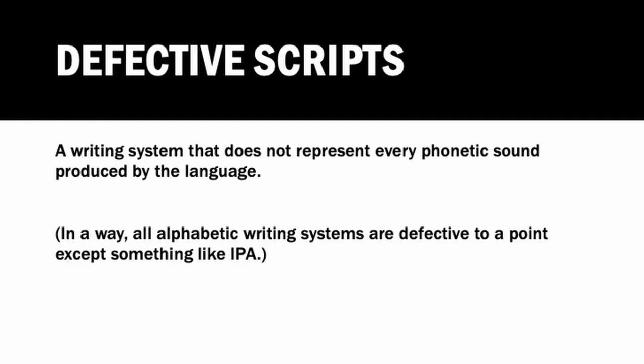There are a number of syllabic writing systems that do capture every sound — things like the scripts of the Indian subcontinent, Japanese, or at least the Hiragana and Katakana systems, things like that. Even in the ancient world, Akkadian is by and large not defective.